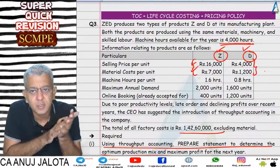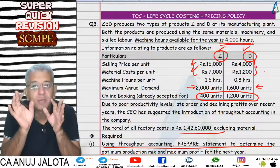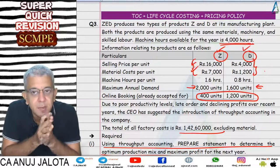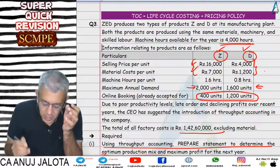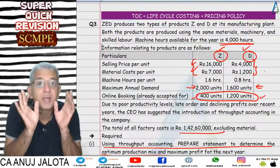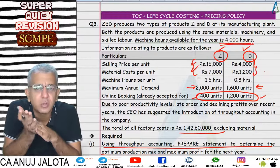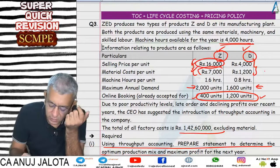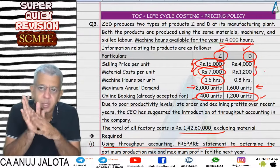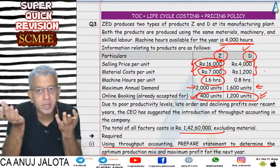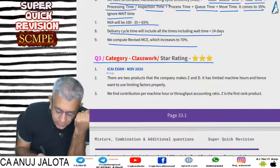Maximum annual demand was given. The company had already accepted an online order for 400 units of Z and 1,200 units of D. Since those orders are already accepted, you must produce those quantities regardless of rank. For the remaining machine hours, you use the ranks based on contribution per machine hour. So produce the pre-accepted quantities first, then allocate balance hours based on rank.